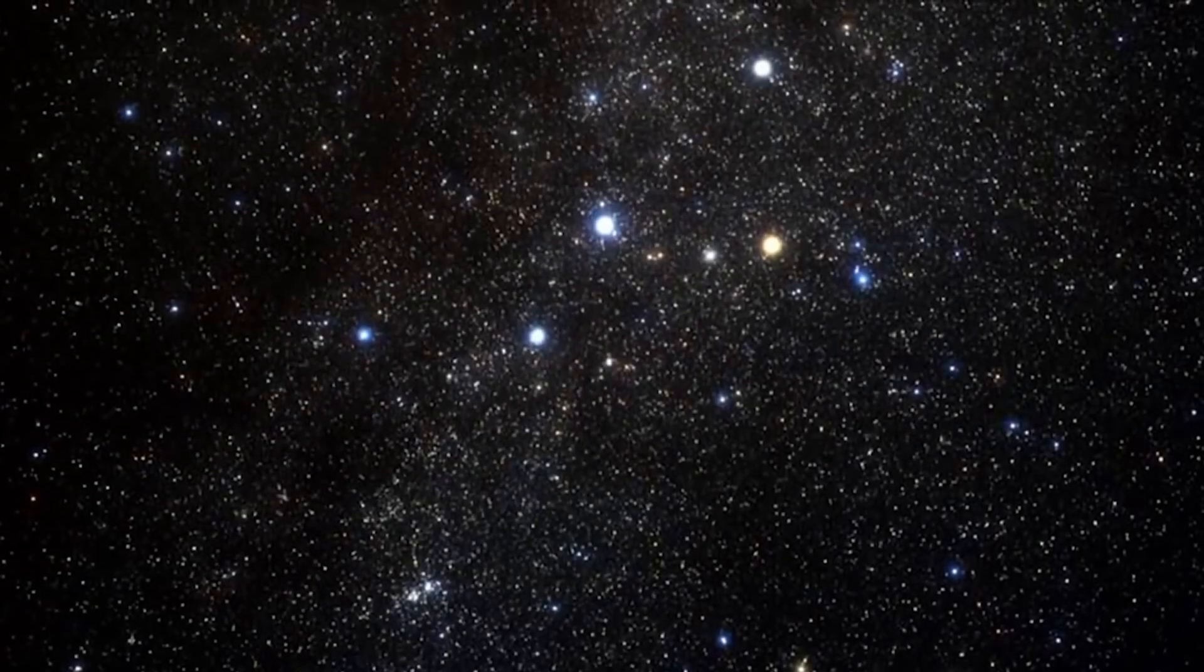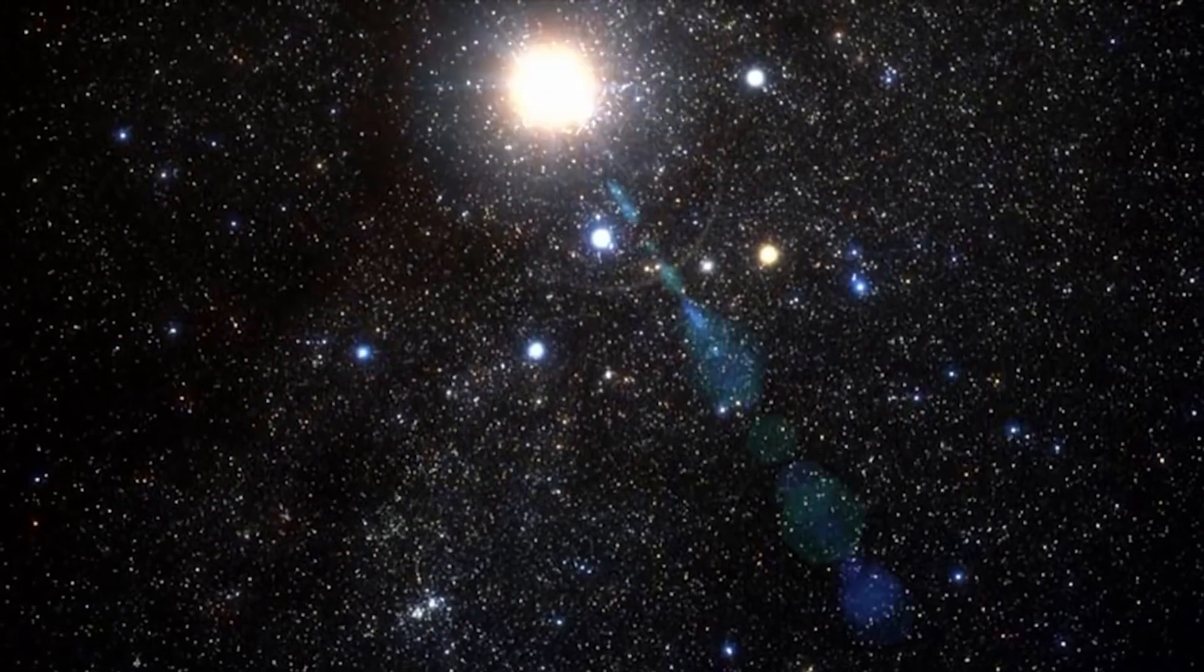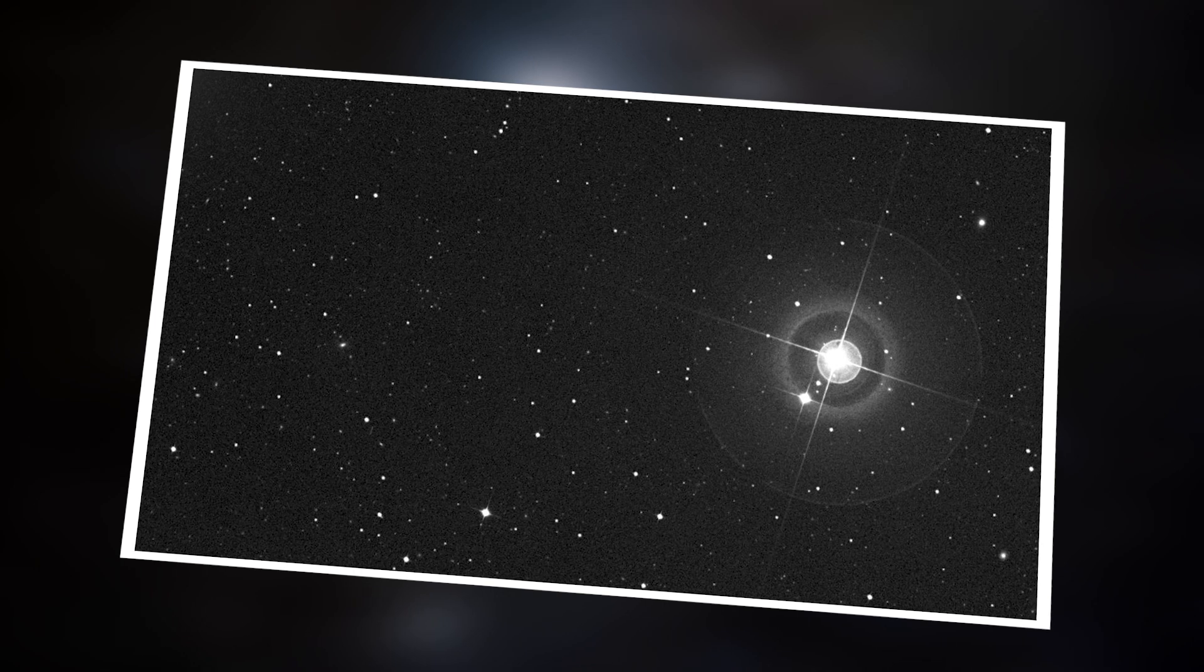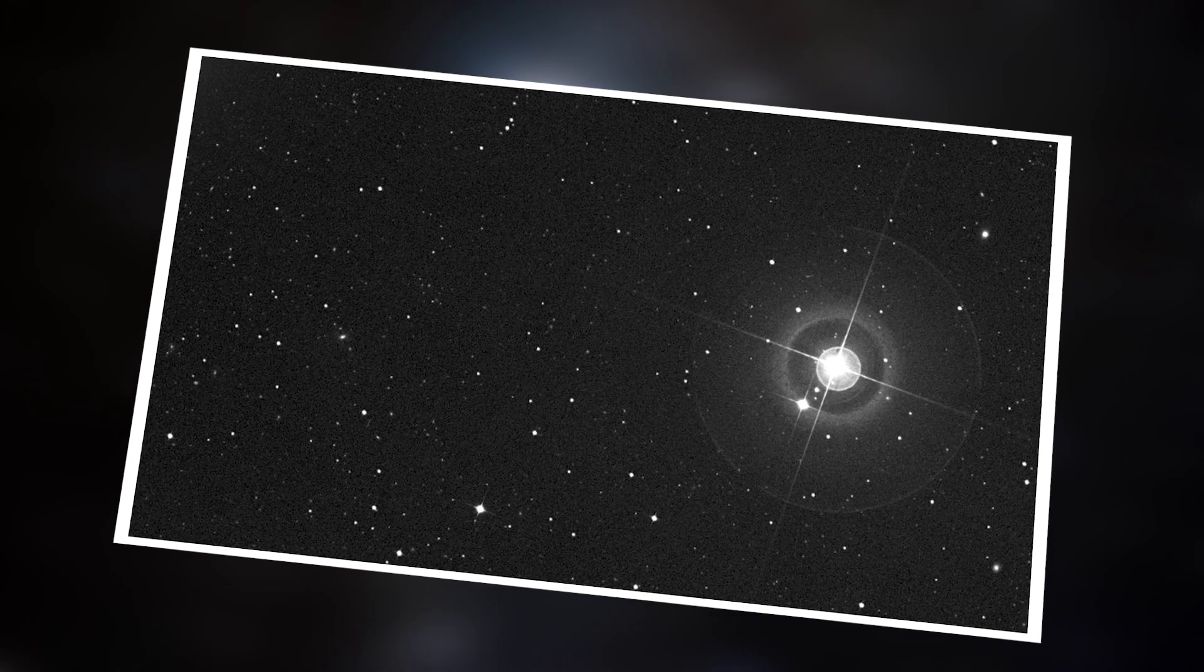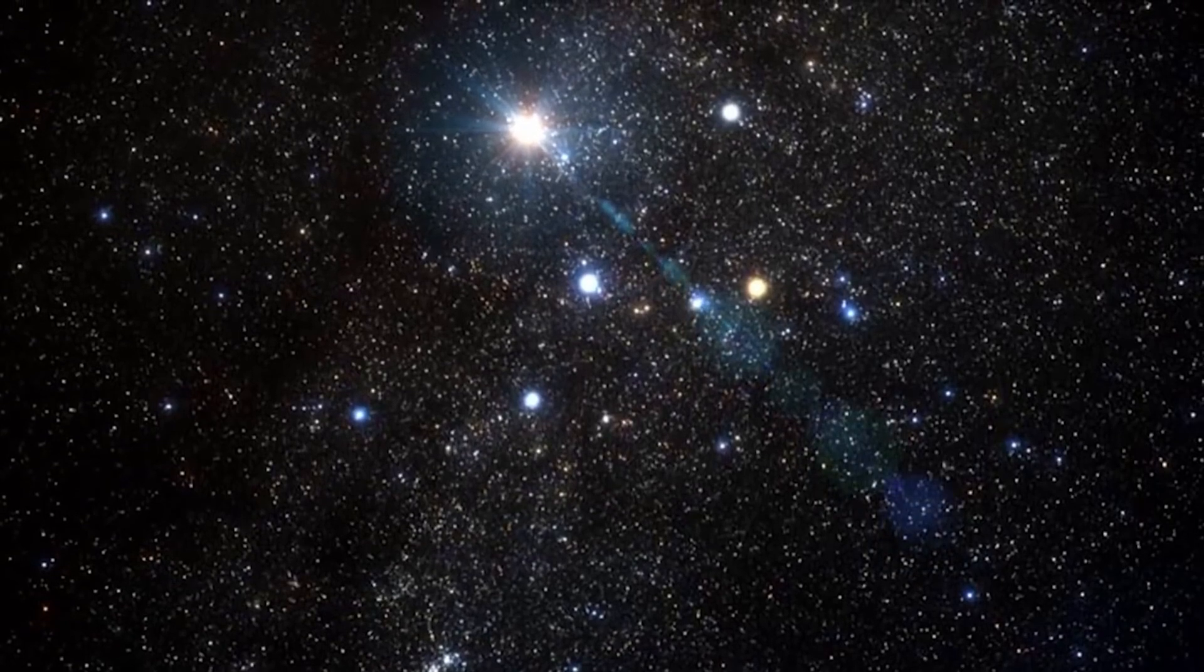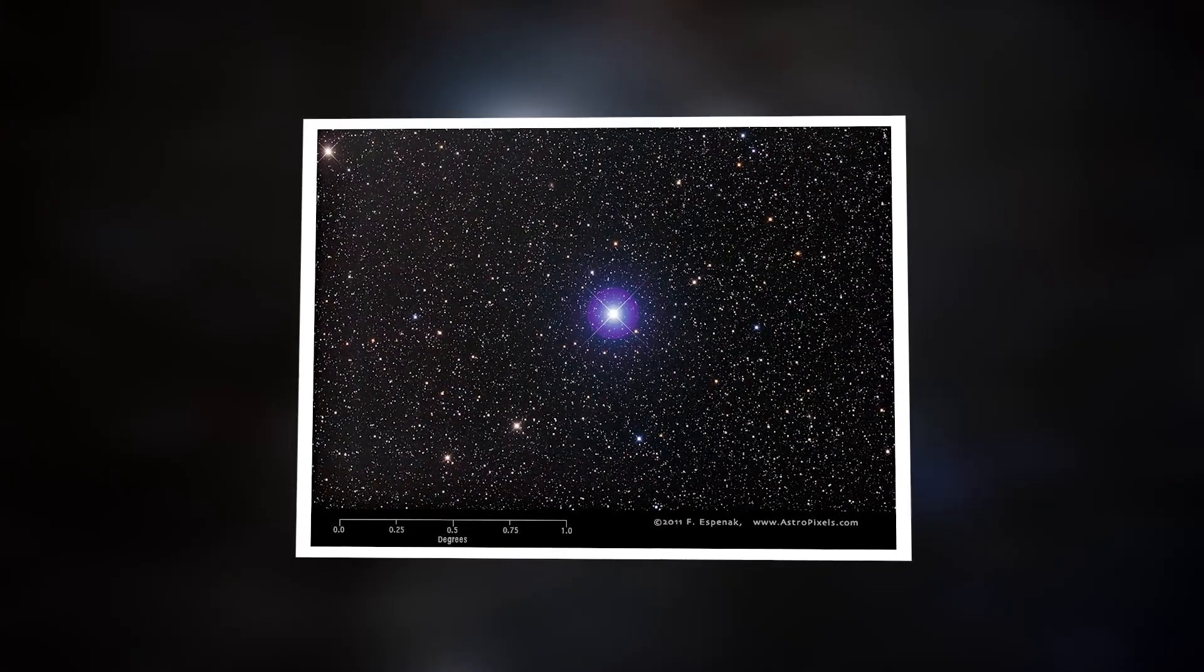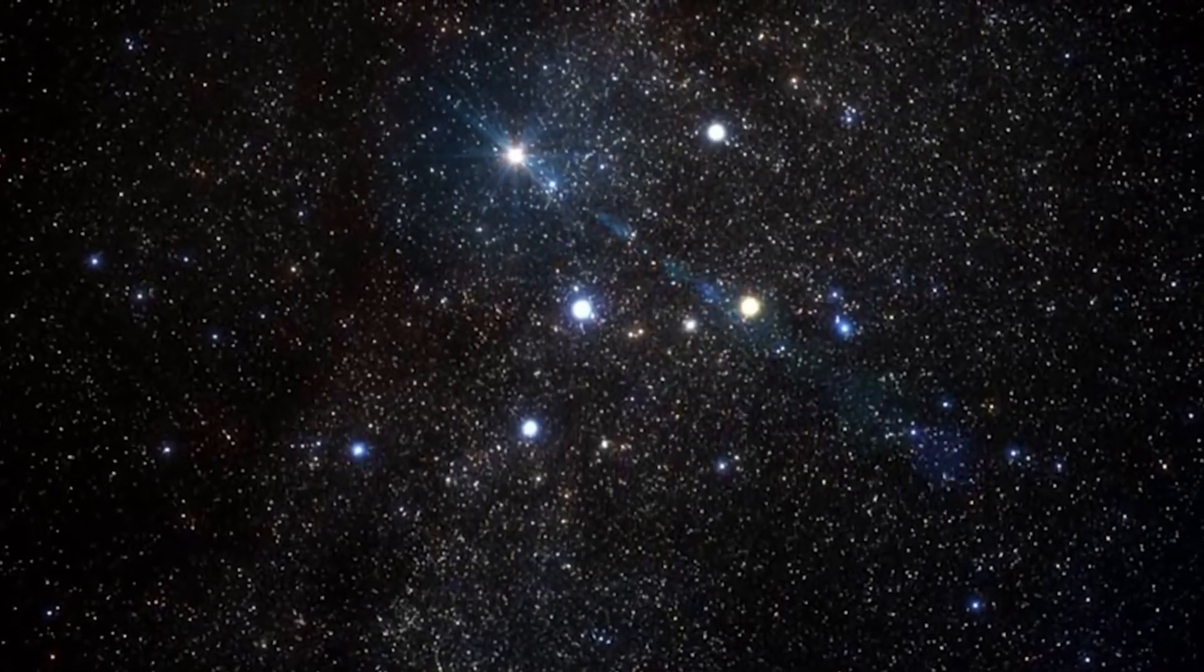For example, some stars go through cycles of bright and dim phases. Star Mira is known as the Wonder Star because it changes its brightness, expanding and contracting on a regular basis, which affects the amount of light that it emits. This phenomenon is common in many stars, including the star Algol and 30 other stars that can be observed in the night sky without a telescope.